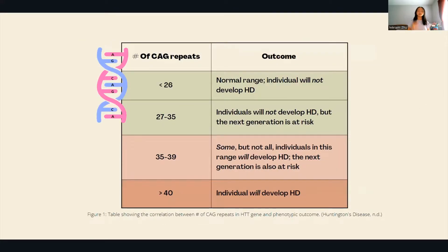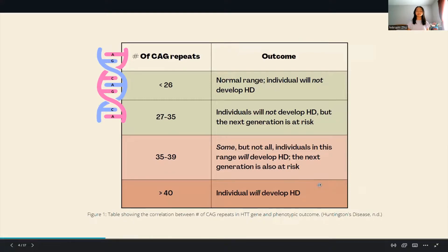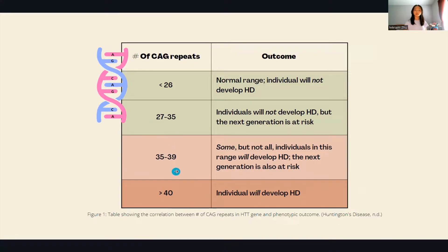Huntington's depends on the number of glutamine repeats. If you have more than 40 repeats you are guaranteed to develop Huntington's. There is also a borderline range from 27 to 39 repeats — it's called the borderline range because parents in this range won't have Huntington's themselves,